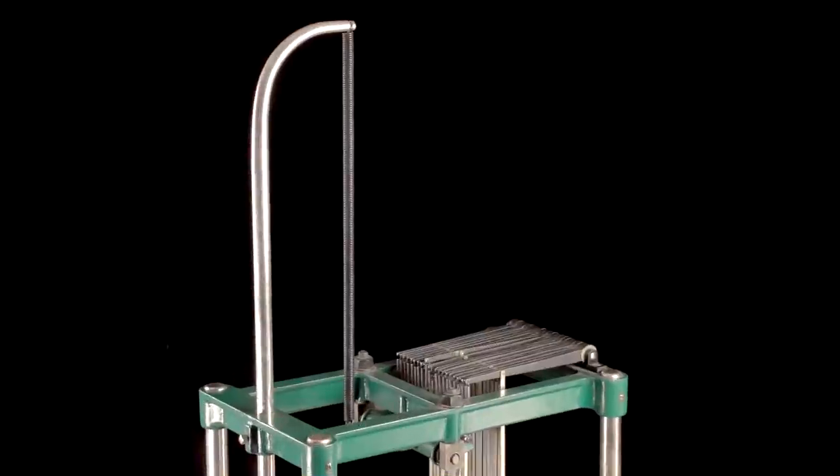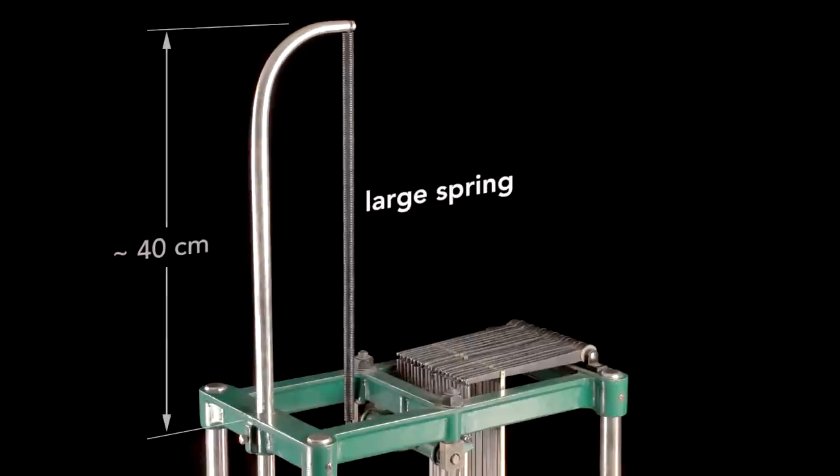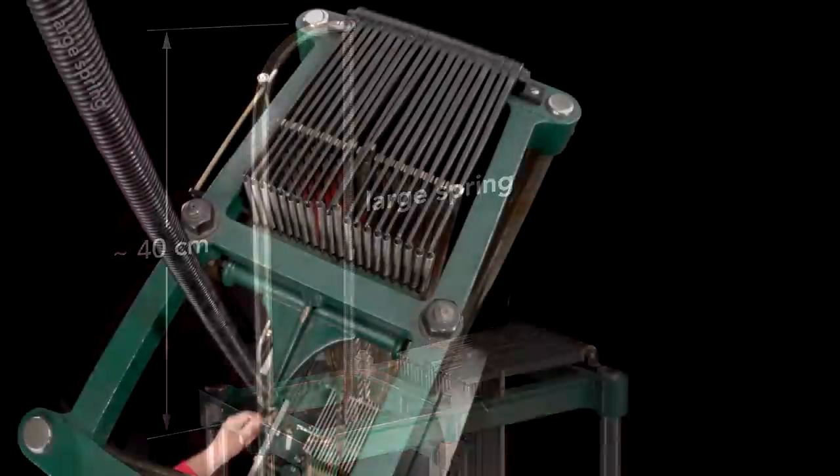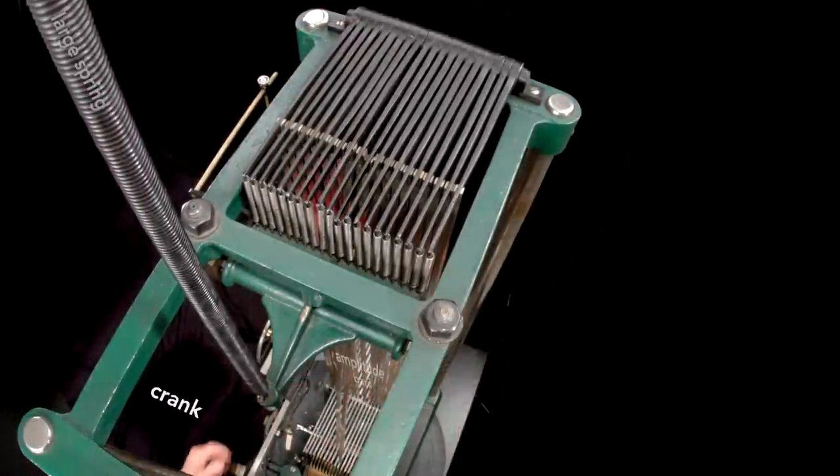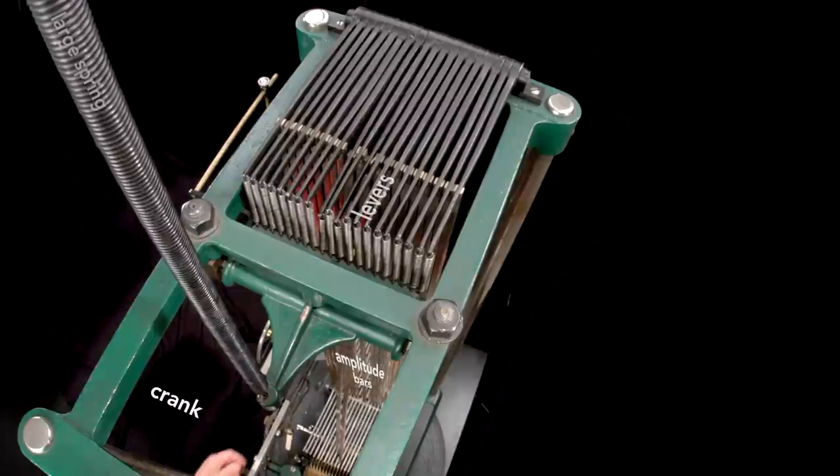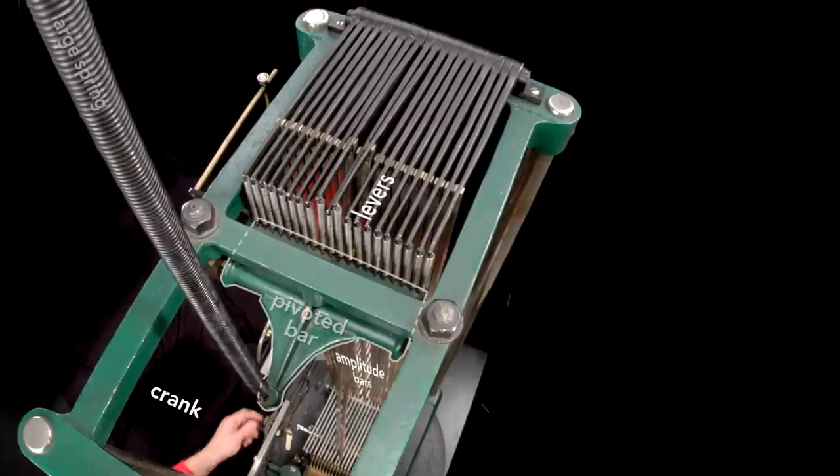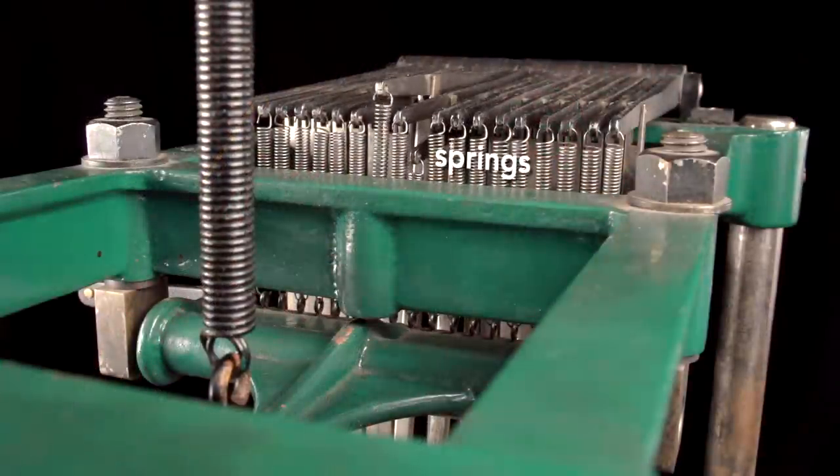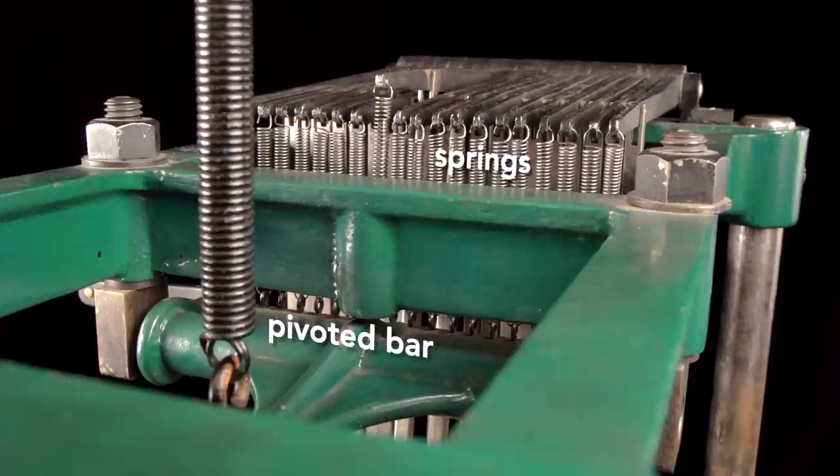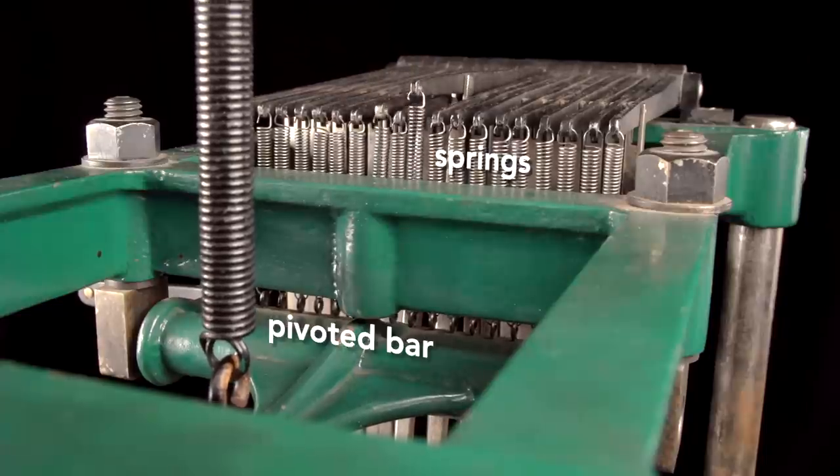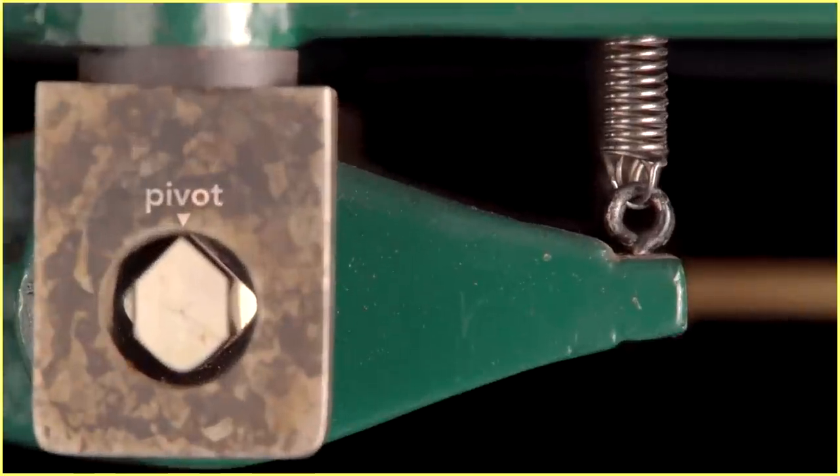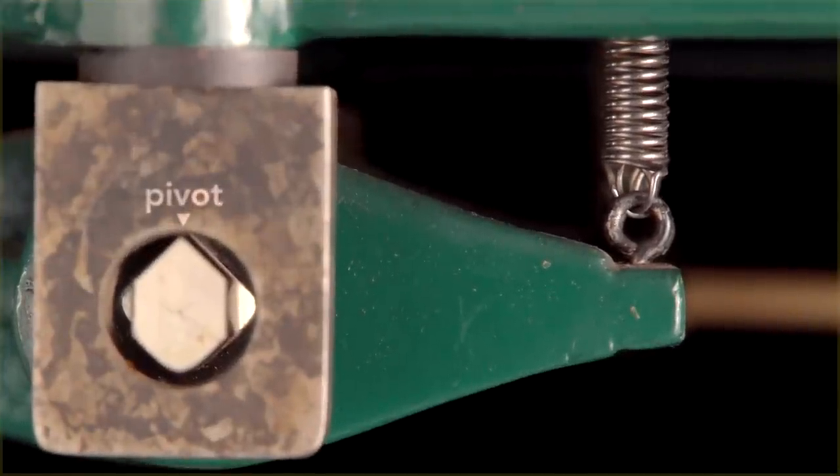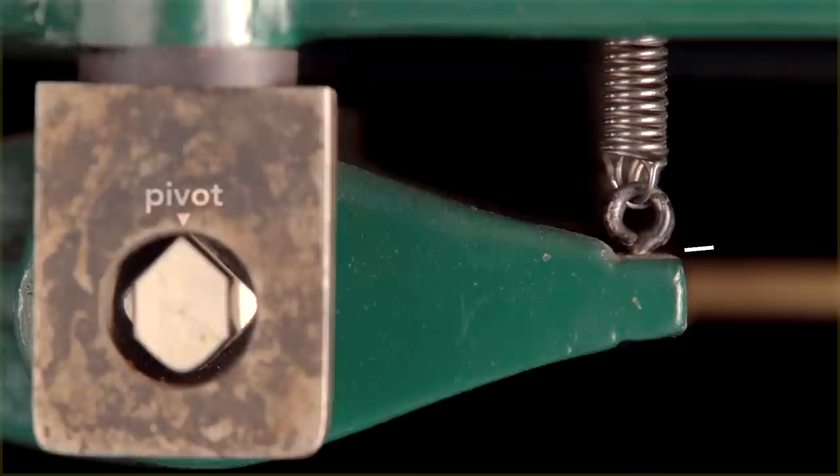If we look at the top, we see the spring extends more than a foot above the machine. As I turn the crank, the amplitude bars drive the spring-loaded levers up and down. This in turn moves the pivoted bar. Because the springs all pull on the same pivoted bar, their displacements are summed. If we take a close look at the pivoted bar, we see that it sweeps out a small arc.